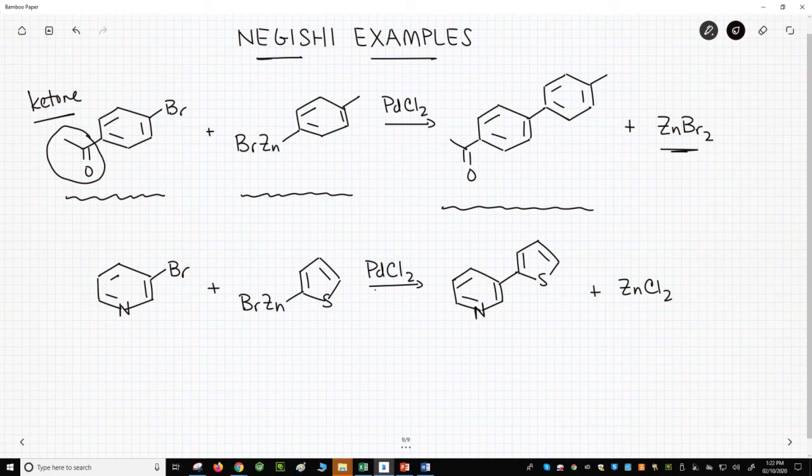A Grignard would quickly attack a ketone, but organozinc reagents are less reactive and only participate in the desired coupling reaction.